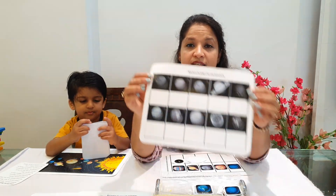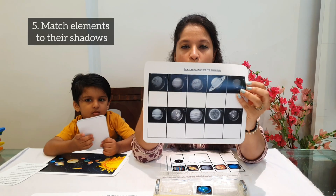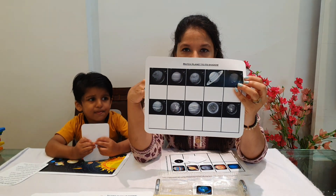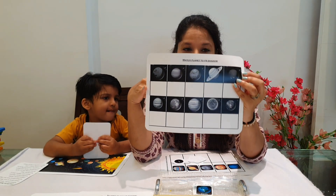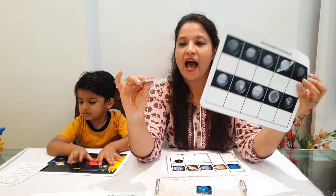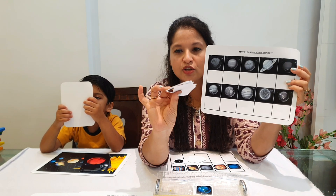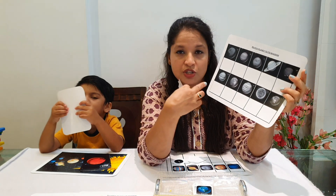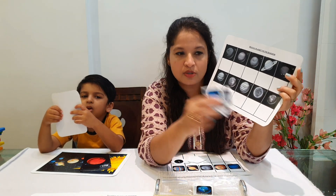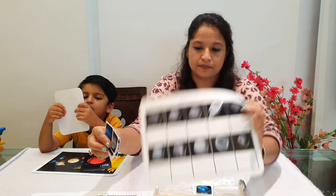Next is matching the planet to its shadow. All planets are shown alongside their shadows in black and white, and matching cards are provided in the kit. Your child looks at the shadow silhouettes and matches the correct planet to each one.